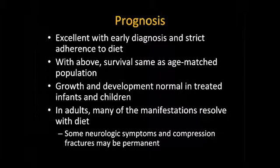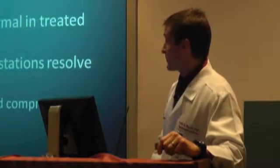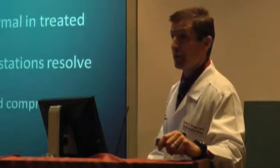Prognosis for celiac disease is actually excellent with early diagnosis and strict adherence to the gluten-free diet. Your survival will be just as good as an age-matched population. In children, if caught before puberty, they should have normal growth and development — they may need to catch up a little but should do so. Interestingly, people with undiagnosed celiac disease are on average about three inches shorter than the non-celiac population. In adults, many manifestations will resolve on a gluten-free diet — infertility issues, vitamin deficiencies, diarrhea, skin lesions — though some neurologic symptoms may be more permanent, and compression fractures won't reverse, but at least you may not get more.